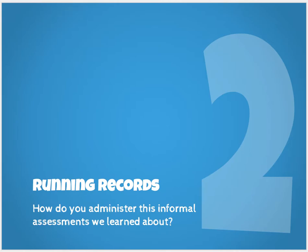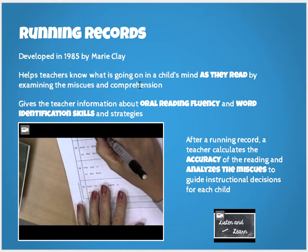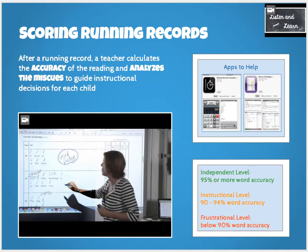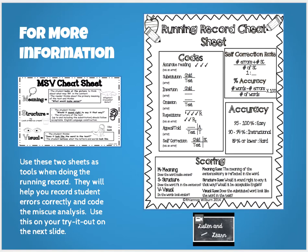Now we're moving into a form of assessment called a running record, which will show you how to administer this informal assessment. It gives you some history of the running record, and you'll actually watch someone complete one. Start with the podcast first, then watch the video. The next slide shows you how to score a running record — start with the podcast in the corner and it'll walk you through all the information. There's also a cheat sheet slide for doing your own running records, and all these forms can be found in the presentation file folder in D2L.